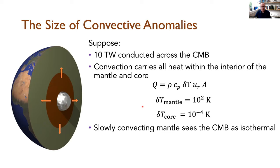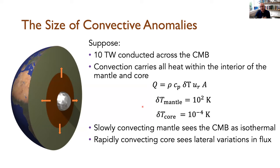A consequence of this dynamically is that the slowly convecting mantle sees the core-mantle boundary as an isothermal boundary condition — the outer core is essentially a constant temperature fluid from the mantle's point of view. Whereas from the core's point of view, the lateral variations on the mantle side are quite large and quite long-lived. It is therefore natural to express the boundary condition on the top of the core as one with lateral variations in heat flux: hot regions of the mantle extract less heat from the core, cold regions extract more.